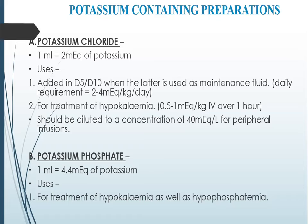While giving it through peripheral venous access, we have to dilute the total fluid to a concentration of 40 milliequivalents per litre. If we have central venous access, we can use concentrations of up to 60 to 80 milliequivalents per litre. The second commonly available potassium preparation is potassium phosphate, where 1 ml contains 0.4 milliequivalents of potassium. It is used for the treatment of hypokalemia as well as hypophosphatemia.